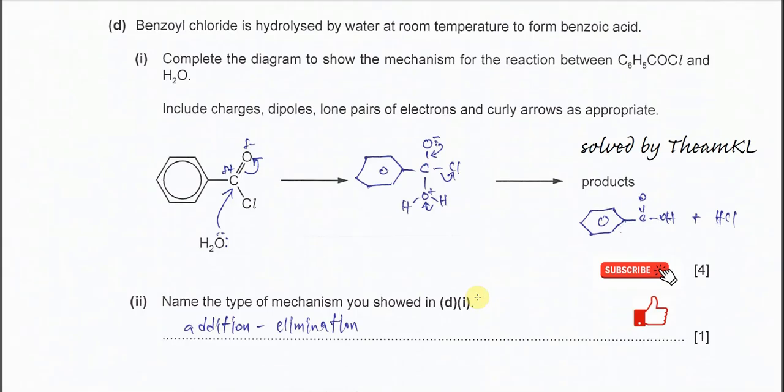Part D. Benzoyl chloride is hydrolyzed by water at room temperature. Complete the diagram to show the mechanism for the reaction between benzoyl chloride and H2O. Include all the charges, dipoles, lone pairs of electrons, and curly arrows as appropriate. So first you need to draw lone pairs on oxygen. One lone pair is enough, but actually there are two lone pairs on oxygen. After you draw the dipole, partial positive on carbon, partial negative on oxygen. If you want you can put partial negative on Cl, no problem.